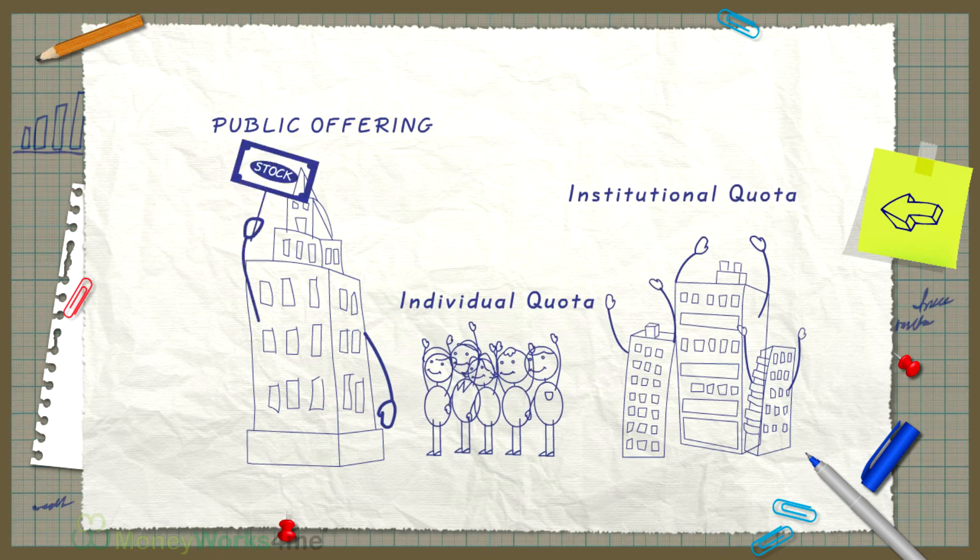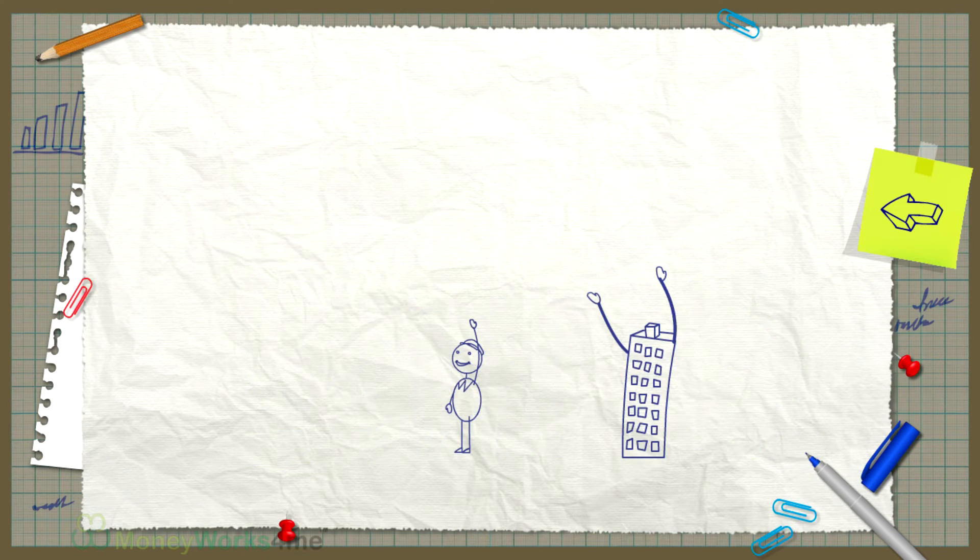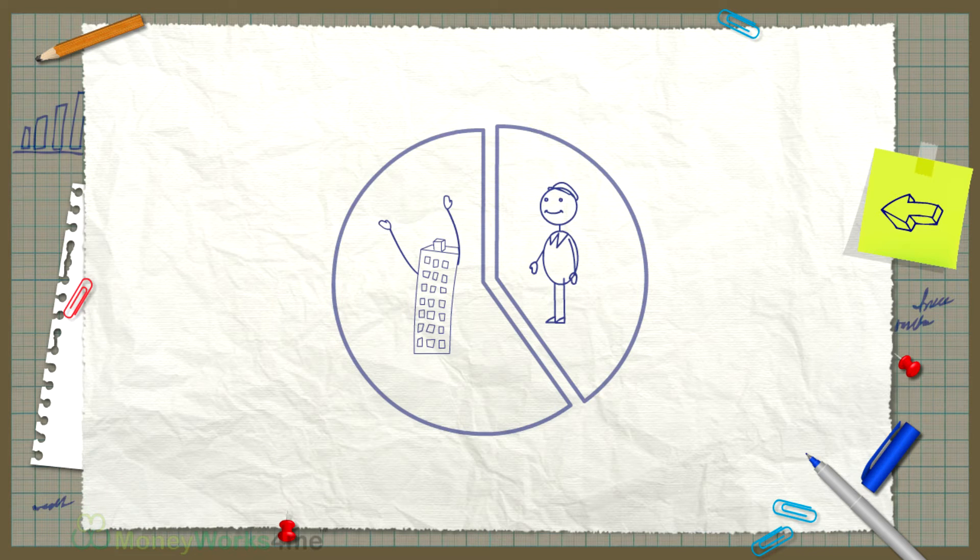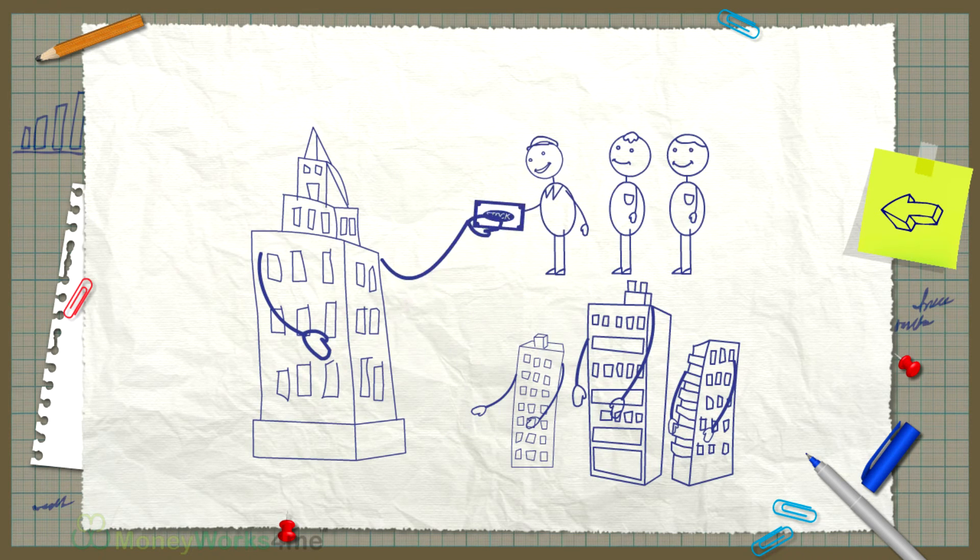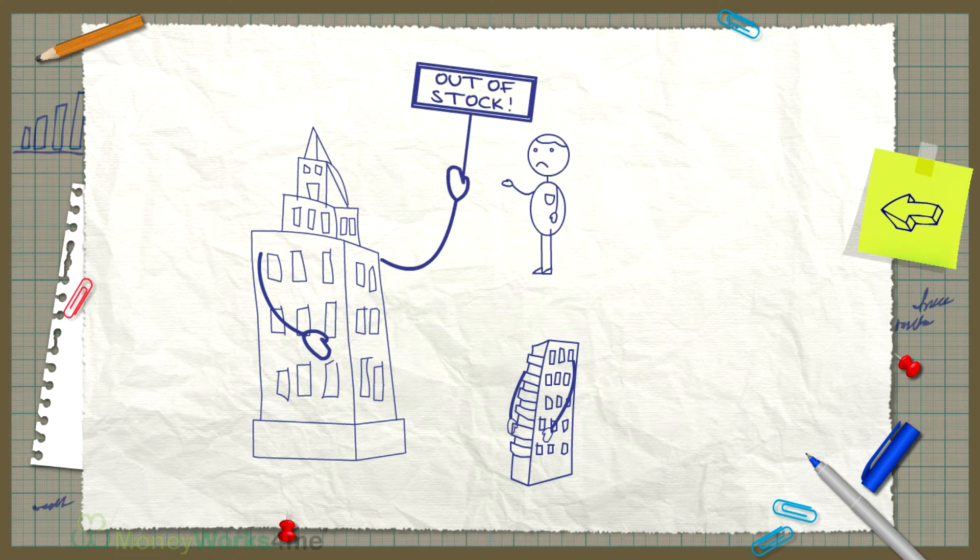In any public offering, both individuals and institutions can apply for shares. There is a fixed quota of shares available for both these categories. Because of this limited quota, not everyone who applies for shares from a company will receive them.